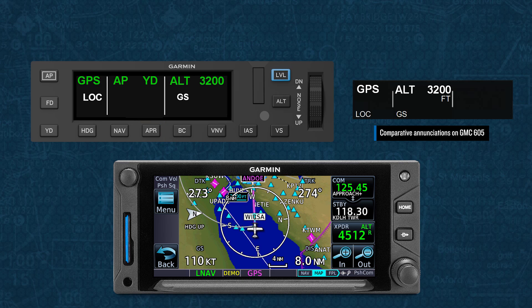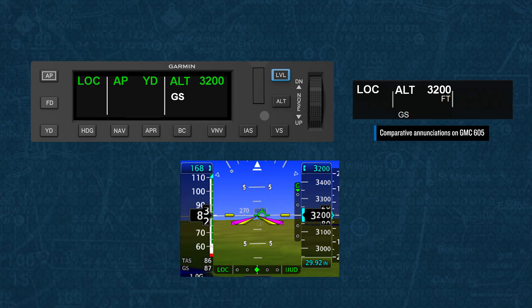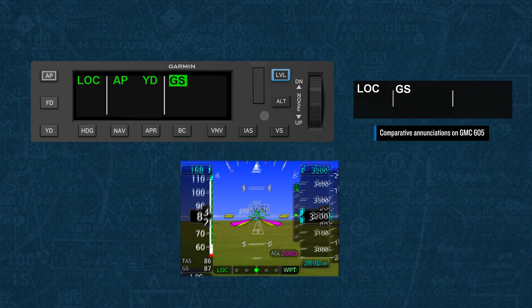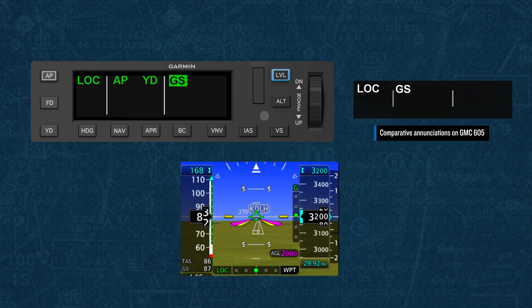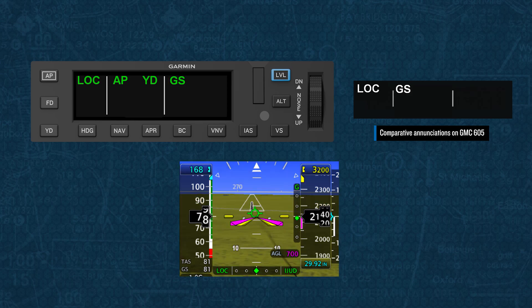Arming the approach is done by pressing the APR button. After pressing it, you always want to verify that the appropriate armed indications appear. For an ILS approach, you'll see a white LOC appear in the lateral field and a white GS appear in the vertical field. Once inbound to the final approach fix, the navigation source automatically changes from GPS to LOC, so you will see LOC appear in green in the lateral field. As we approach the final approach fix, the vertical deviation indicator nears the center and the glide slope is captured, as shown by the GS annunciation showing in green. With both the localizer and glide slope captured, the autopilot can be used to fly you to the decision altitude, at which point you will need to disconnect the autopilot and hand-fly to the runway. Note that the autopilot will not level off at the decision altitude.